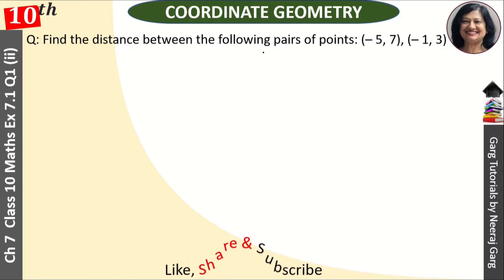Find the distance between the following pair of points: (-5, 7) and (-1, 3).